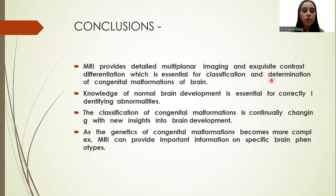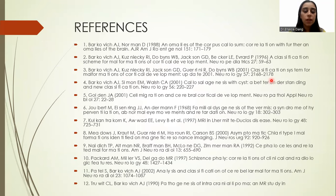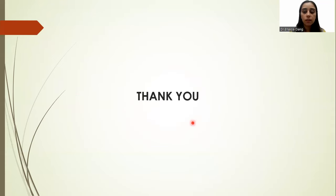In conclusion, MRI provides detailed multi-planar imaging and exquisite contrast differentiation, which is essential for the classification and determination of congenital malformations of the brain. Knowledge of normal brain development is essential for correctly identifying abnormalities. The classification of congenital malformations is continually changing with new insights into brain development, and as the genetics of congenital malformations become more complex, MRI can provide important information on specific brain phenotypes. Thank you.